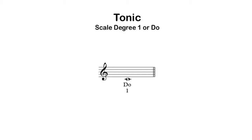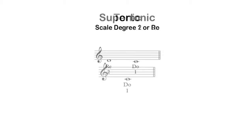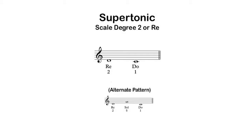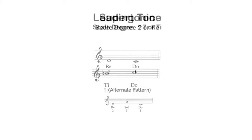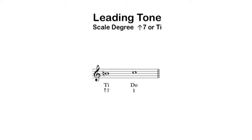Let's start with patterns that are identical to the patterns in the major mode. Those would be the patterns for scale degree 1 or tonic: DO. The pattern for scale degree 2 or the supertonic: 2-1. And there's an alternate pattern for scale degree 2: 2-5-1. And the pattern for the raised 7th scale degree or leading tone: TI-DO. In the minor mode, scale degrees 6 and 7 have two different possible positions — a raised position and a lowered position — which we'll discuss in a few minutes.